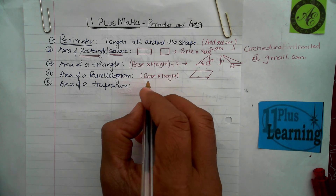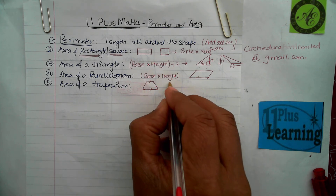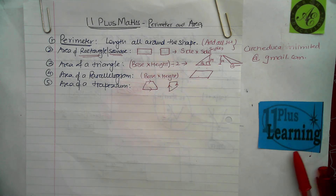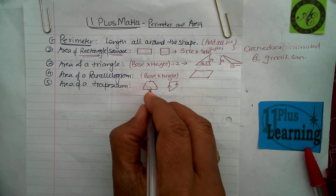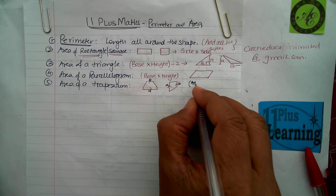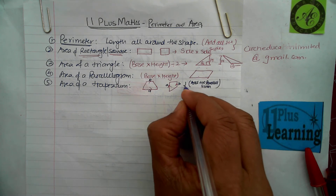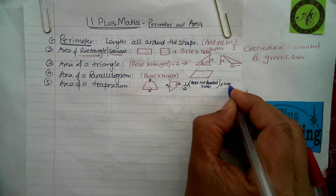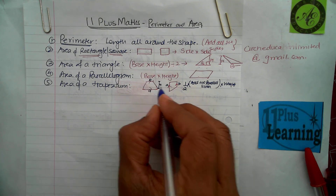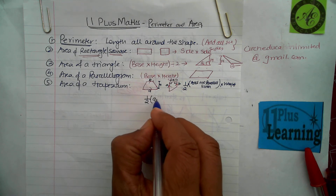For a trapezium or trapezoid, it has two parallel sides. The parallel sides are labelled a and b. To find the area, you add the parallel sides a and b, take half of that, then multiply by the height. The height is the perpendicular distance between the parallel sides. So the formula is: half of (a + b) times the height.